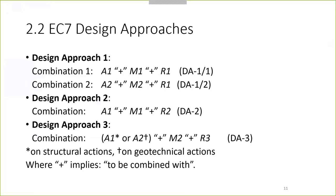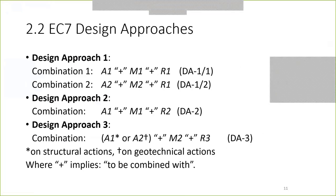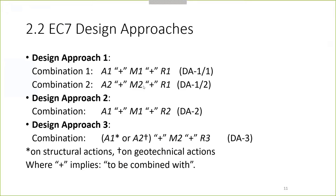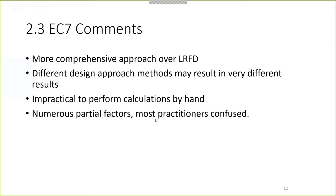The material factors include reductions in the material properties and strengths of soils, and resistances like passive pressures are divided by a safety factor. While it is a more comprehensive approach over the American LRFD, the different design methods from Eurocode 7 can result in very different results. It's also very impractical to perform calculations by hand, and with all these different partial factors, most practitioners will get confused.